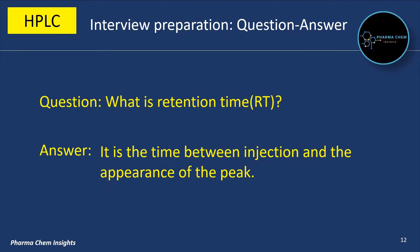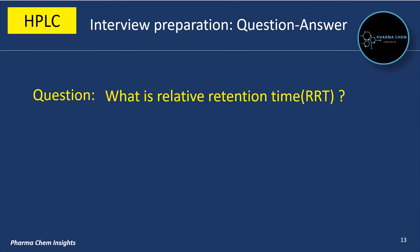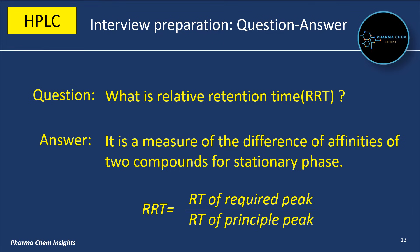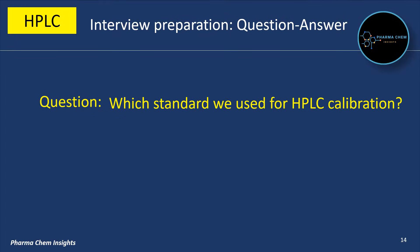What is retention time (RT)? It is the time between injection and appearance of the peak — it is called retention time RT. What is relative retention time (RRT)? Relative retention time is a measure of the difference of affinities of two compounds for the stationary phase. The formula for RRT is: retention time of the required peak divided by retention time of the principal peak, i.e., the main peak.